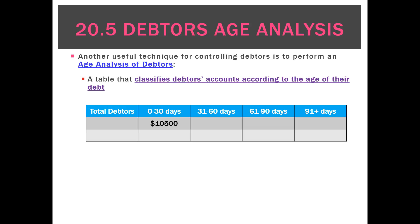For example, we might have $10,500 of debtors whose accounts are between 0 to 30 days due. We could have debtors of $2,000 whose accounts have been outstanding from 31 to 60 days, $1,000 of debtors who haven't paid from the last 61 to 90 days, and then $500 of debtors whose accounts are at least 91 days or higher overdue.